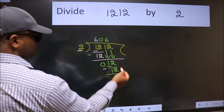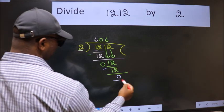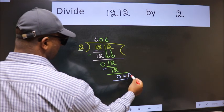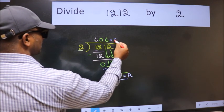No more numbers to bring down. So we stop here. This is our remainder and this is our quotient.